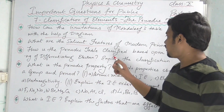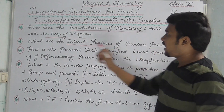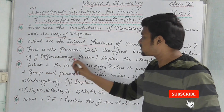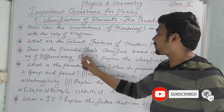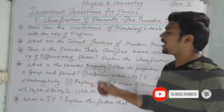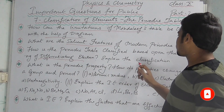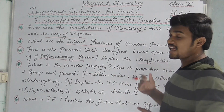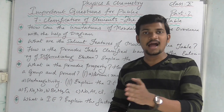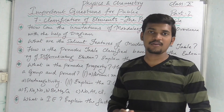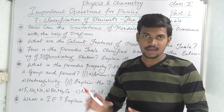Next: how is the periodic table classified based upon the entering of the differentiating electron? You need to explain the classification based on which orbital the differentiating electron enters. These are four important questions.